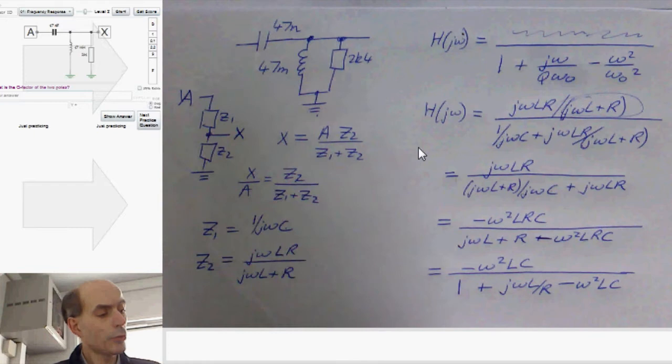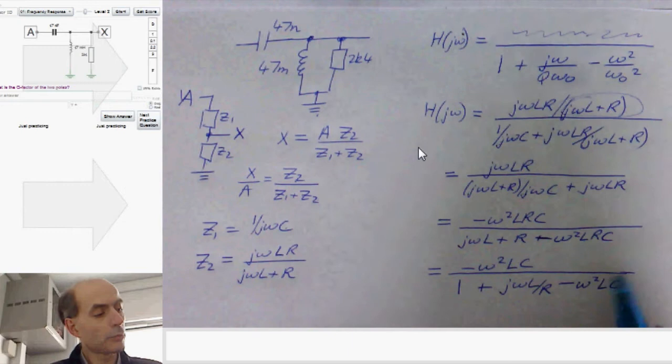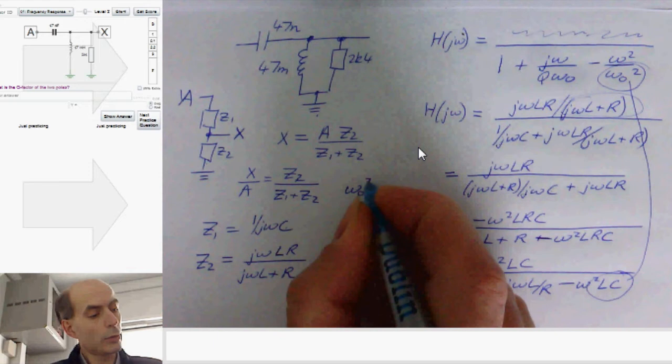This is now in the form that I was trying to get it in up here. You can just by inspection see, by comparing this equation and this equation, that we must have ω², ω₀ squared, the resonant frequency squared, is 1 over LC.